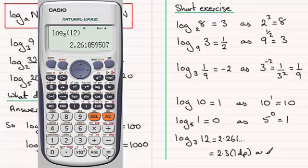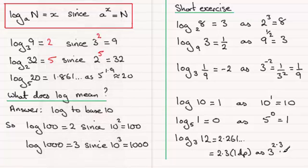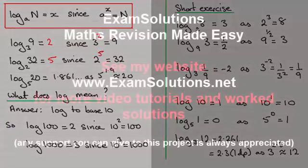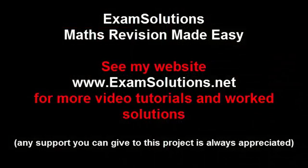So we're saying that 3 to the power 2.3 is going to give us approximately 12. In the next video in this series, I want to show you some more rules that we use when working with logarithms. Thanks for listening — that brings us to the end of this video.